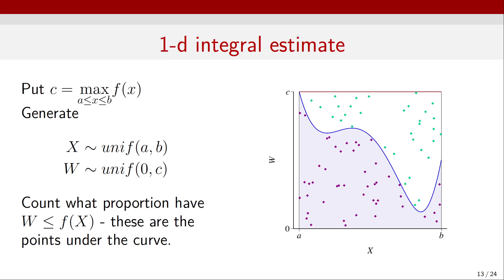Suppose c is the maximum of f of x in the interval a to b. We can generate points on the x-axis randomly distributed between a and b as x coordinates, and also generate points w on the y-axis uniformly distributed between 0 and c, the maximum of the function. We then count the number of points that have w lower than or equal to f of x — these are the points under the curve. The proportion of points that fall under f of x divided by the total number gives an estimate of the integral.